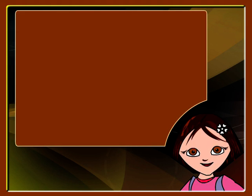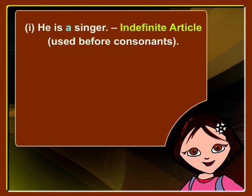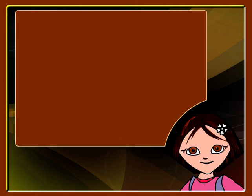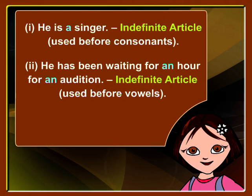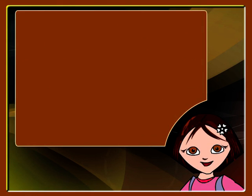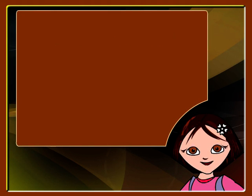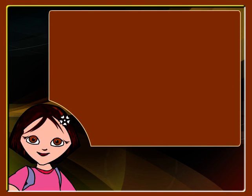With this knowledge in mind, let us look at some examples. 'He is a singer.' In this sentence, A is the indefinite article. 'He has been waiting for an hour for an audition.' This sentence contains the word AN, which is an example of another indefinite article. Indefinite article A is used before consonants, and AN is used before vowels. Here are some more examples: 'This is a juicy apple.' 'There goes an elephant.' 'This is an umbrella.' 'I am a good boy.'